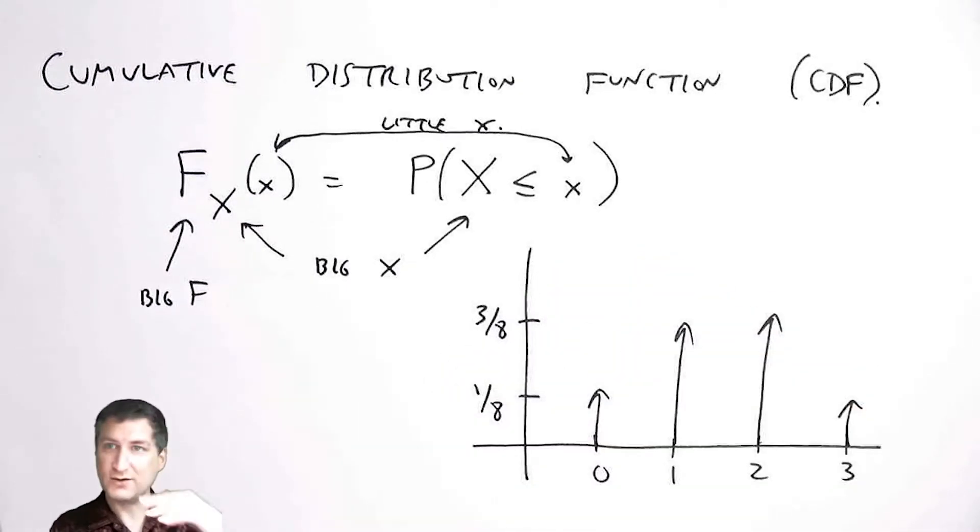I have two of these arrows of height one-eighth and the other two are of height three-eighths, and if I add all these up I get one. So what would the CDF be?